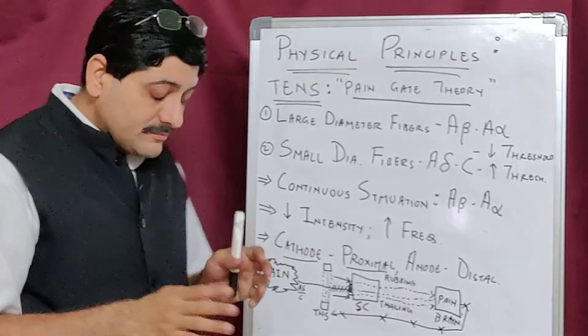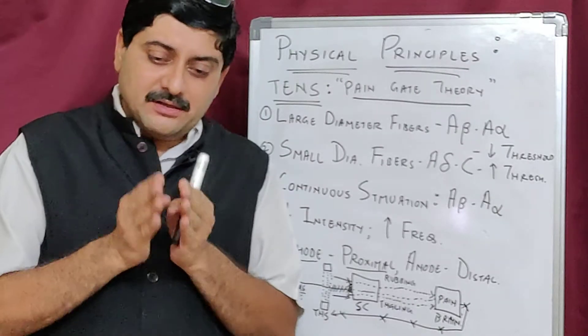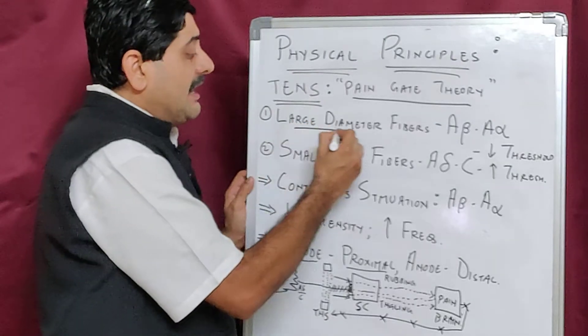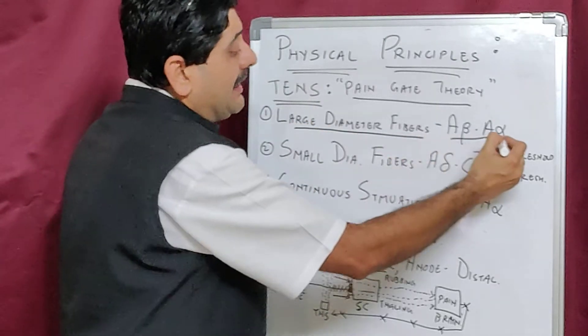When you apply any counter-irritation, it stimulates large diameter A-beta and A-alpha mechanoreceptor fibers.